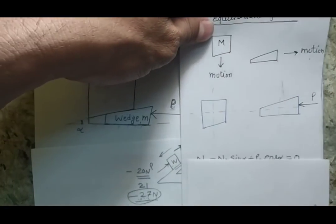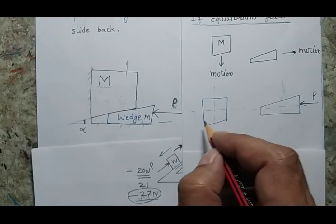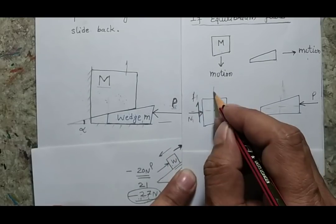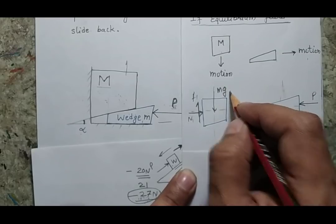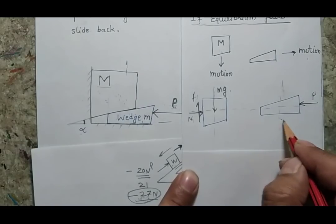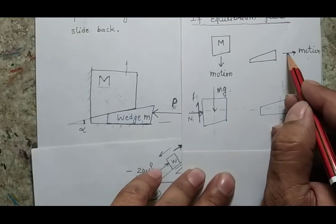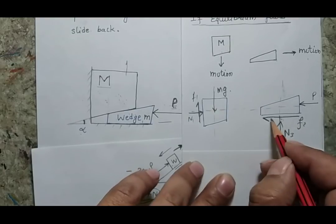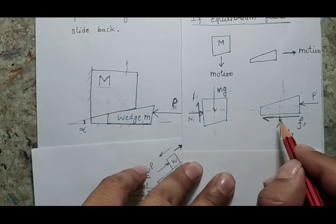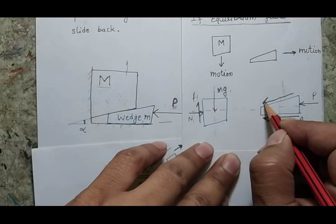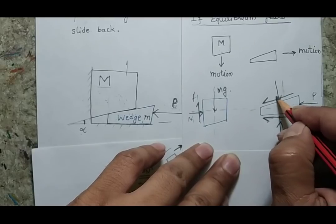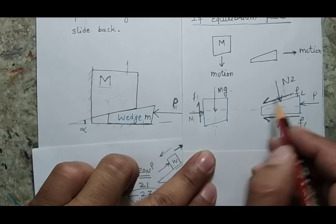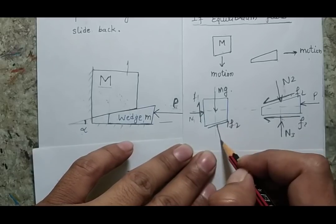Based on this, I can define the direction of friction on all the surfaces. If the body is coming down, this would be the upward direction of friction and this is the normal reaction, F1 and N1. This is the mass of the body acting downward. Similarly, if the wedge is going in the rightward direction, this would be the leftward direction of friction at the bottom surface, giving us N3 and F3. And as I said, if you can identify one force direction on the wedge, the other force will also be in the same direction — giving F2 and N2.